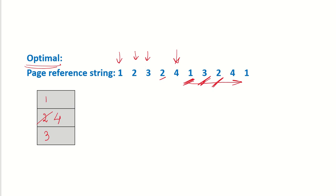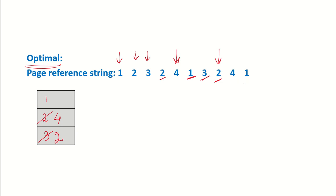When we come to the reference of 1, it is a hit. Then 3 is also a hit. Then 2 is a page fault — looking further ahead, 4 and 1 are also going to be used, so we replace 3 by 2. Then the next reference to 4 is a hit, and the next reference to 1 is also a hit. Counting the page faults gives 5 page faults under Optimal. So we have the least number of page faults in Optimal, then FIFO with 6, and the most in LRU with 9.